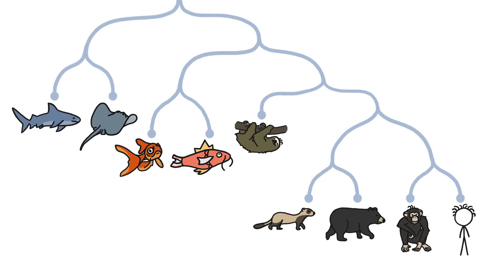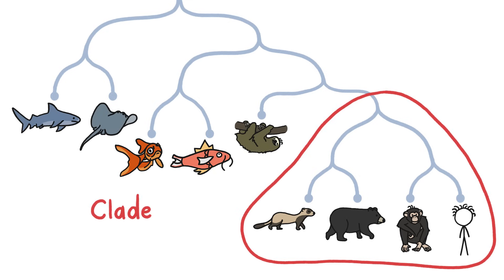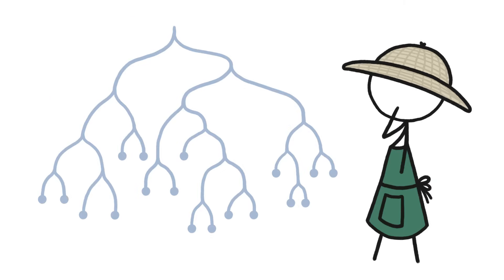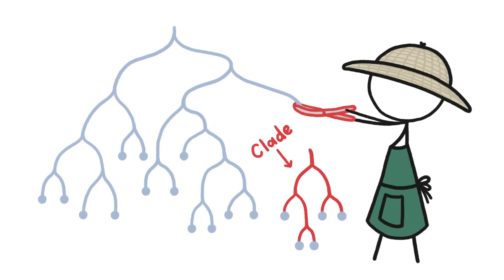So today, scientists name groups of species using clades, which takes evolutionary relatedness into account. A clade is a group that includes a single most recent common ancestor and every one of that ancestor's descendants. An easy way to identify a clade is to cut one, and only one, branch off the tree of life. All of the species that fall off will form a clade. And all of the species within that clade are more closely related to each other than they are to any species outside of the clade.